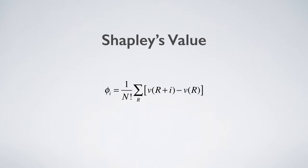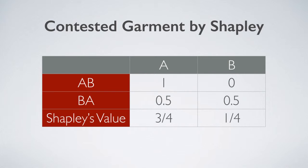The same results can be obtained by using the Shapley value, which is the sum of all marginal values divided by the number of permutations. When there are two persons, A and B, there are only two permutations: AB and BA.